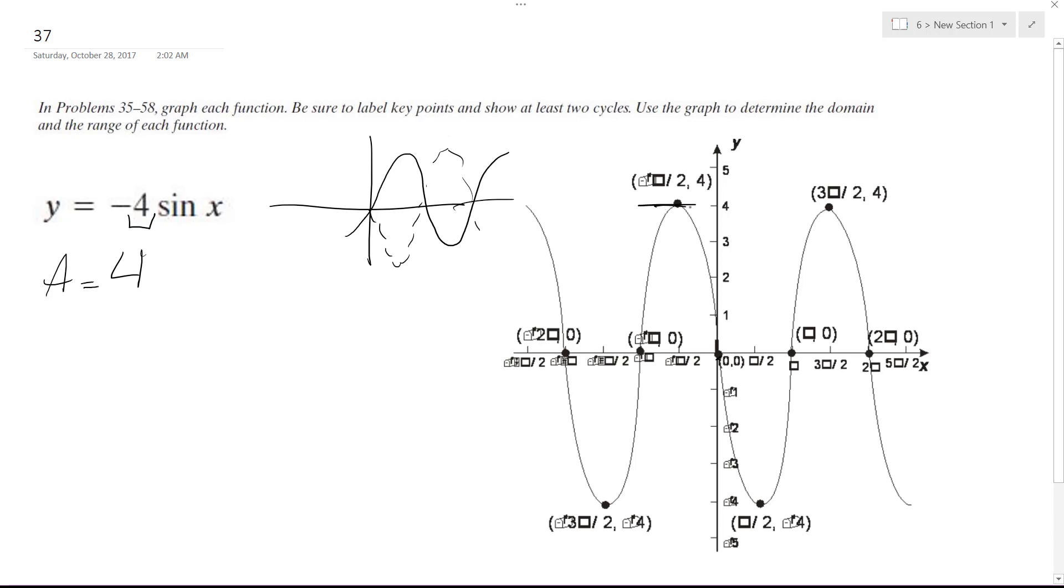So you can see here that the amplitude is 4. The period is just 2 pi divided by omega. In this case, omega is just 1. There's the coefficient in front of x, just 1, so it's 2 pi.